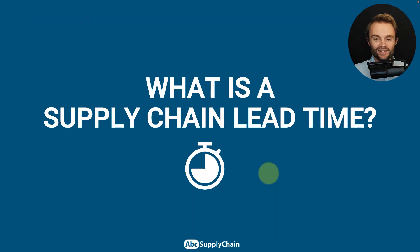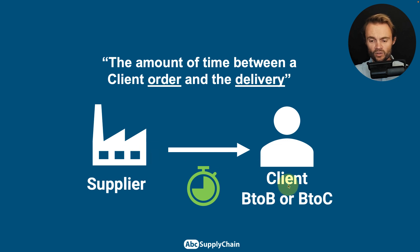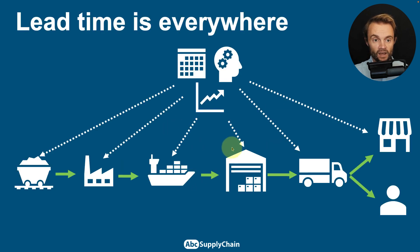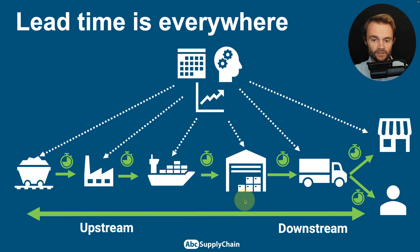Let's go back to basics. What is a supply chain lead time? A supply chain lead time is the amount of time between a client order and a delivery. You may have a supplier delivering a client — business-to-business or business-to-consumer. Lead time is basically everywhere: from the raw material supplier to the factory, to transportation, the warehouse, local transport, and the retailer or business client. We have upstream lead time and downstream lead time.